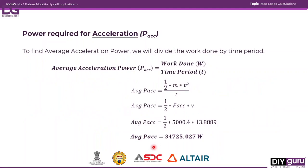To find the average acceleration power, we divide the work done by the time period. Following through the equation, the average acceleration power equals ½ times the acceleration force multiplied by velocity. Solving with the given values, the average acceleration power is 34,725 watts.